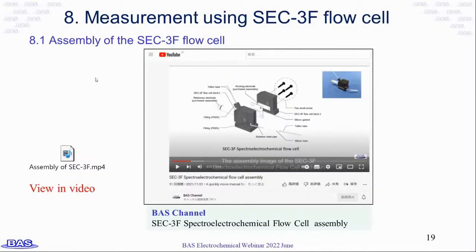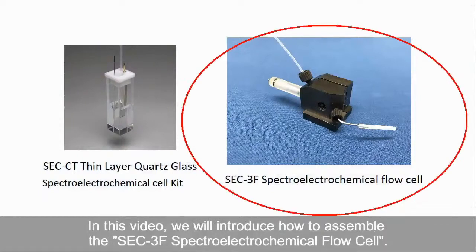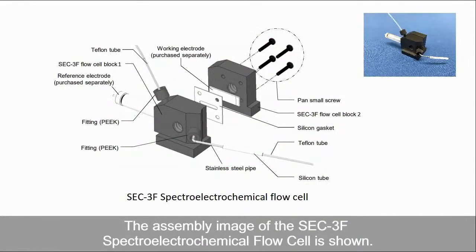Next, I will show you how to assemble the SEC3F flow cell by video. You can also watch the video on our BAS channel. For the spectroelectrochemical cells there are batch type SECCT and flow type SEC3F. In this video, we will introduce how to assemble the SEC3F spectroelectrochemical flow cell. The assembly image of the SEC3F spectroelectrochemical flow cell is shown.